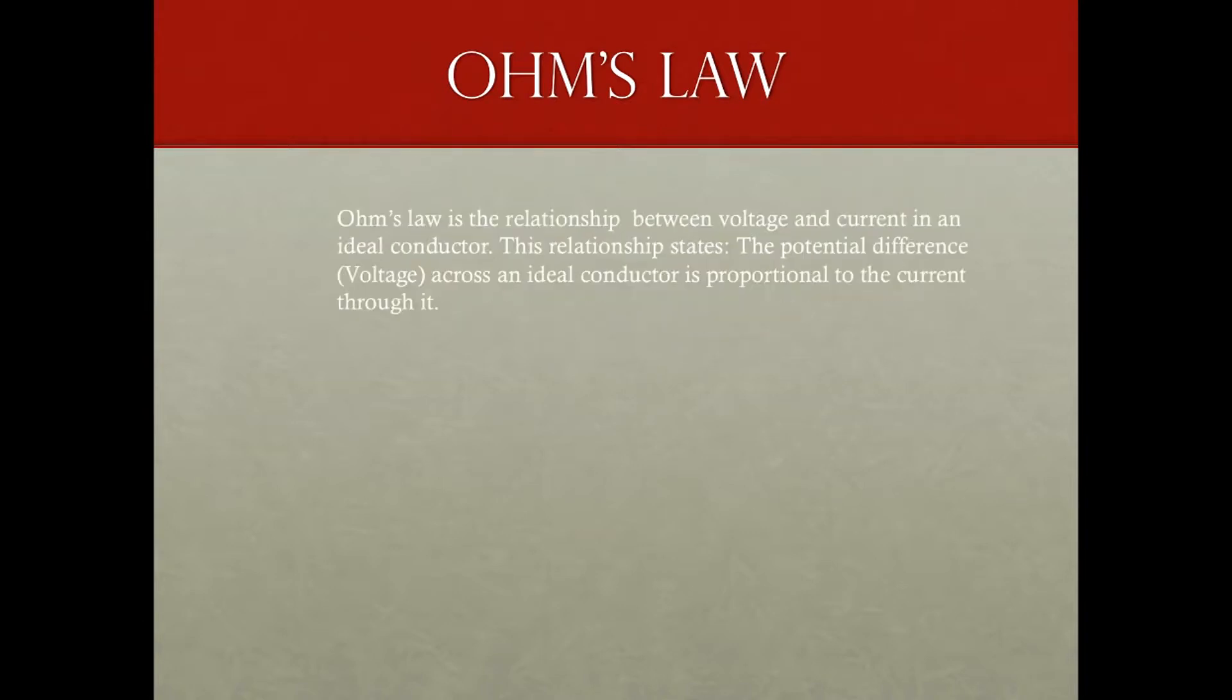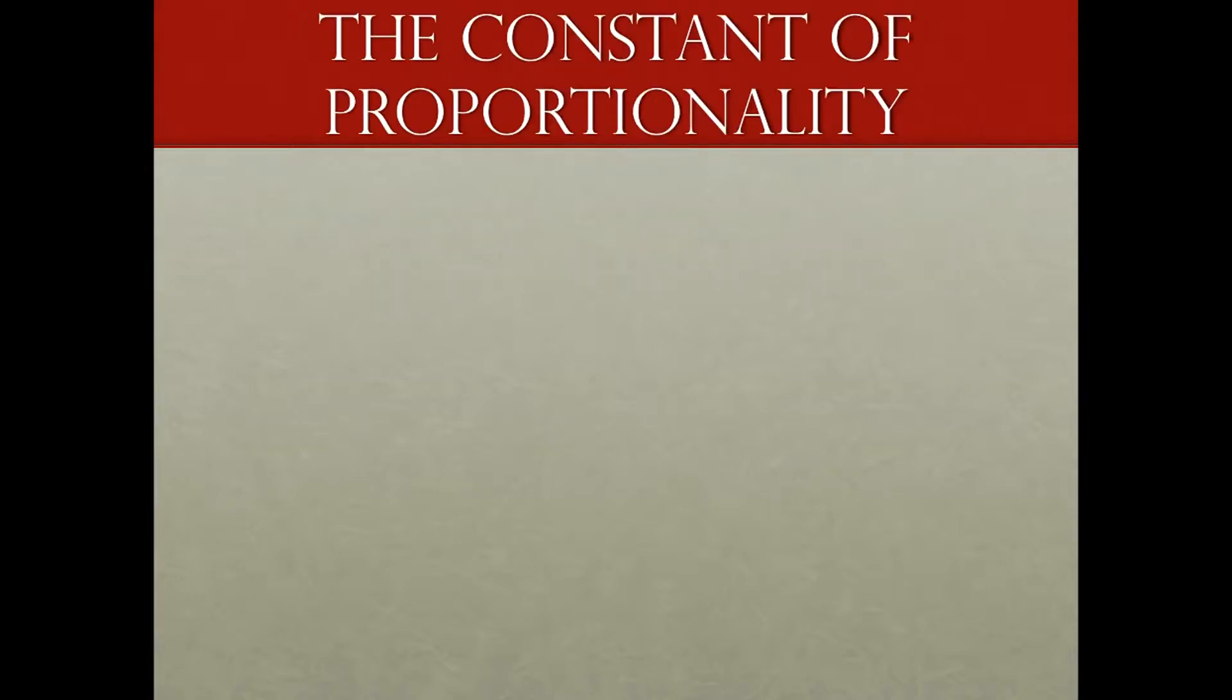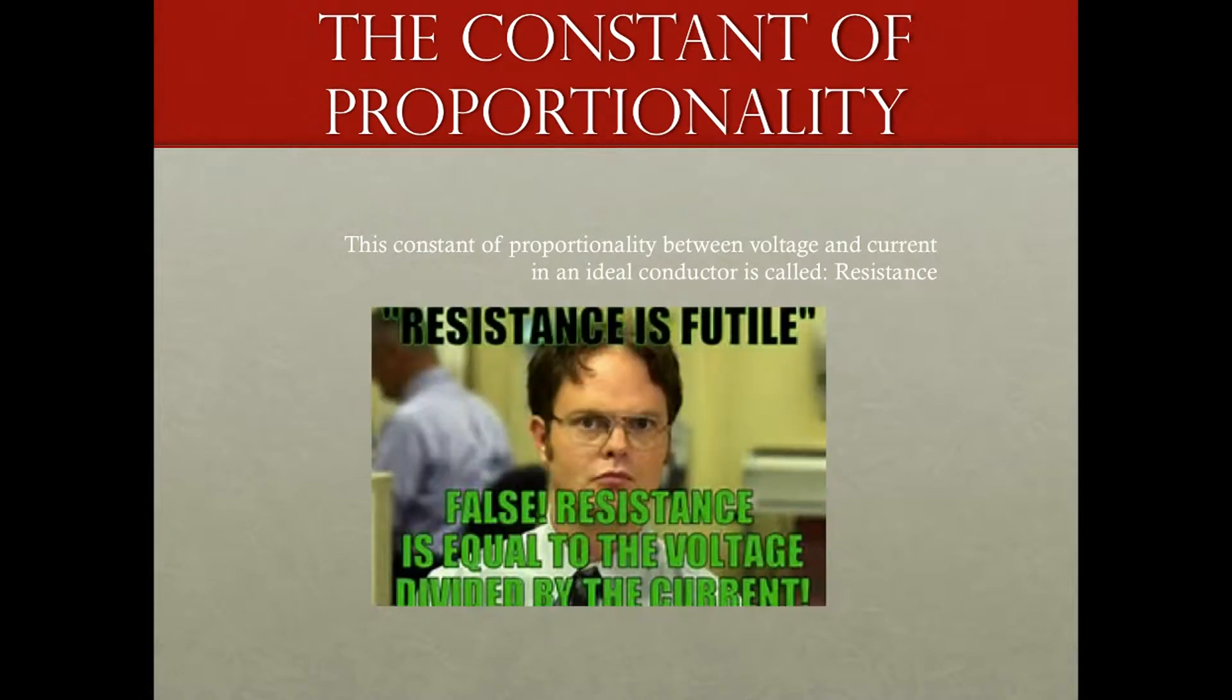So what is Ohm's Law? It is the relationship between voltage and current in an ideal conductor. This relationship states that the potential difference or voltage across an ideal conductor is proportional to the current going through it. The constant of this proportionality between voltage and current in an ideal conductor is what we call resistance. Resistance is the voltage divided by the current.